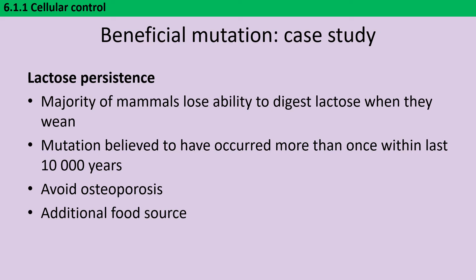Lactose is the sugar found in mammals' milk, and in the majority of mammals, when a juvenile reaches adulthood they stop making the lactase-phlorizin hydrolase enzyme — or just lactase for short — and so they lose the ability to digest lactose. However, a couple of different times a mutation has occurred which causes the lactase promoter to keep working, so you keep producing lactase and can carry on drinking milk. For agricultural societies already keeping cows for their meat, that's a pretty big advantage, both because it gives a good source of calcium compounds helping to avoid osteoporosis, and also as an additional food source during times of scarcity.